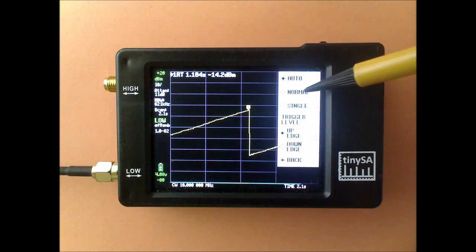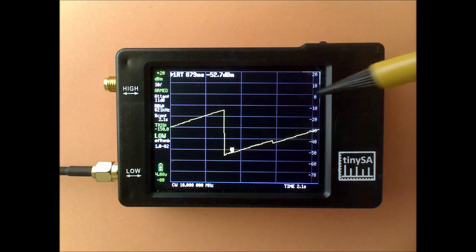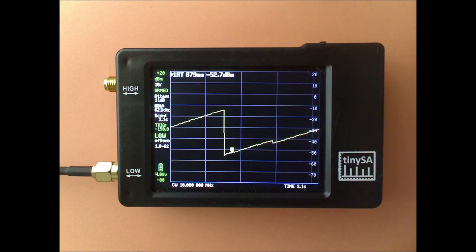I can do that by going into normal trigger mode and set the trigger level to minus 50.